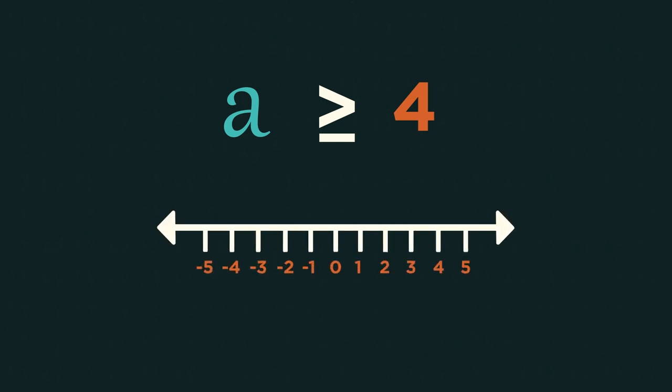On a number line, it would look like this. See how it's represented with a full circle? Whereas B is less than 2 is a hollow circle on a number line.